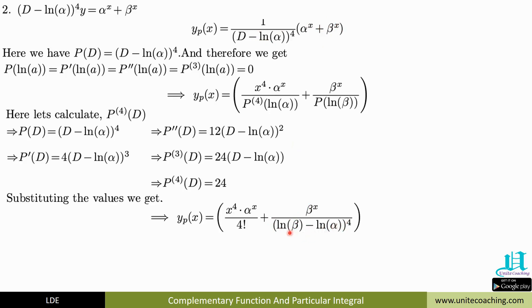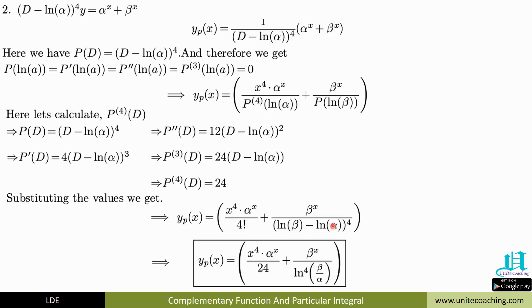For the β^x term, we replace D by ln β. Since P(ln β) = (ln β − ln α)^4 is not zero, it gives β^x / (ln β − ln α)^4. Using the property ln m − ln n = ln(m/n), this becomes β^x / (ln(β/α))^4. The final answer is: x^4 · α^x / 24 + β^x / (ln(β/α))^4. This is the solution for the second example.